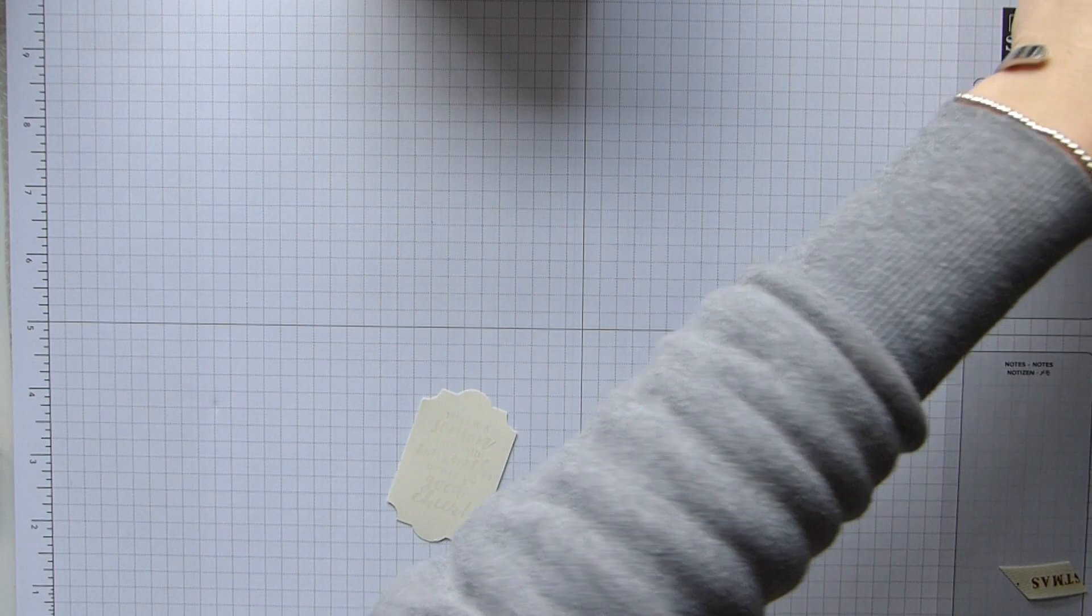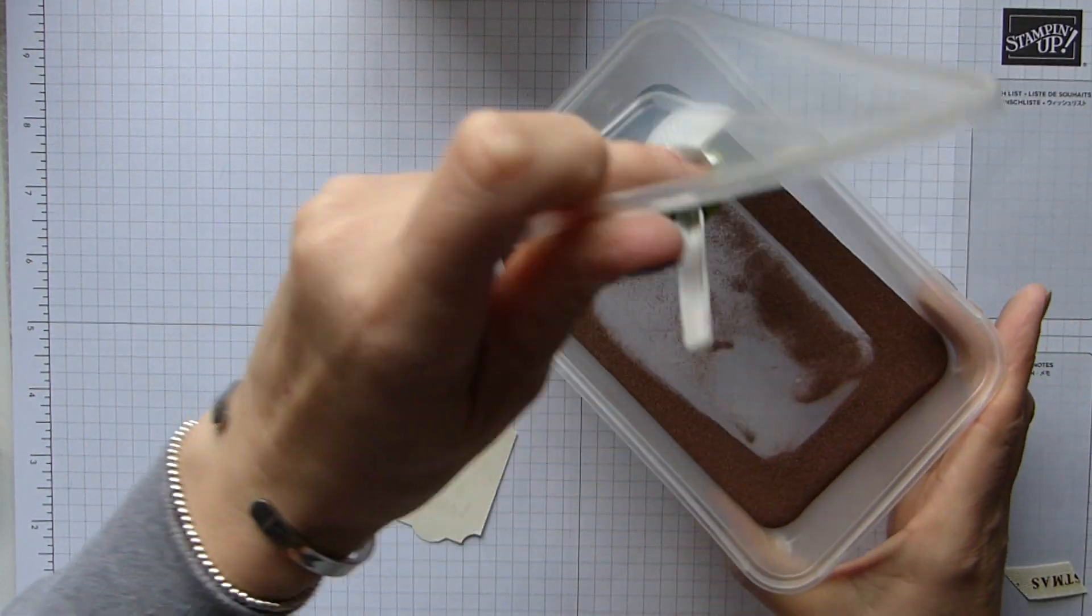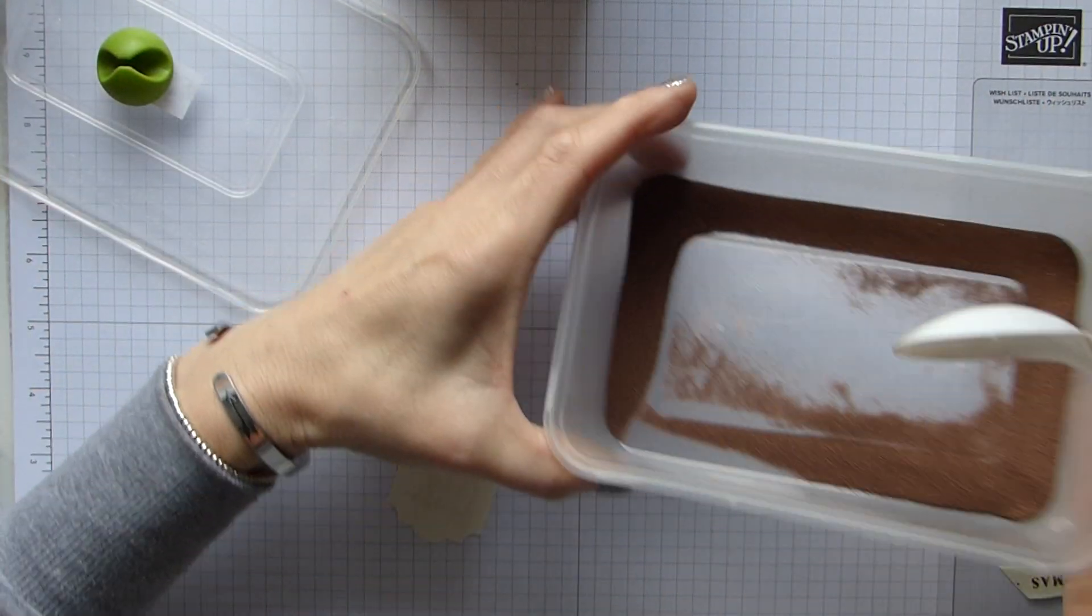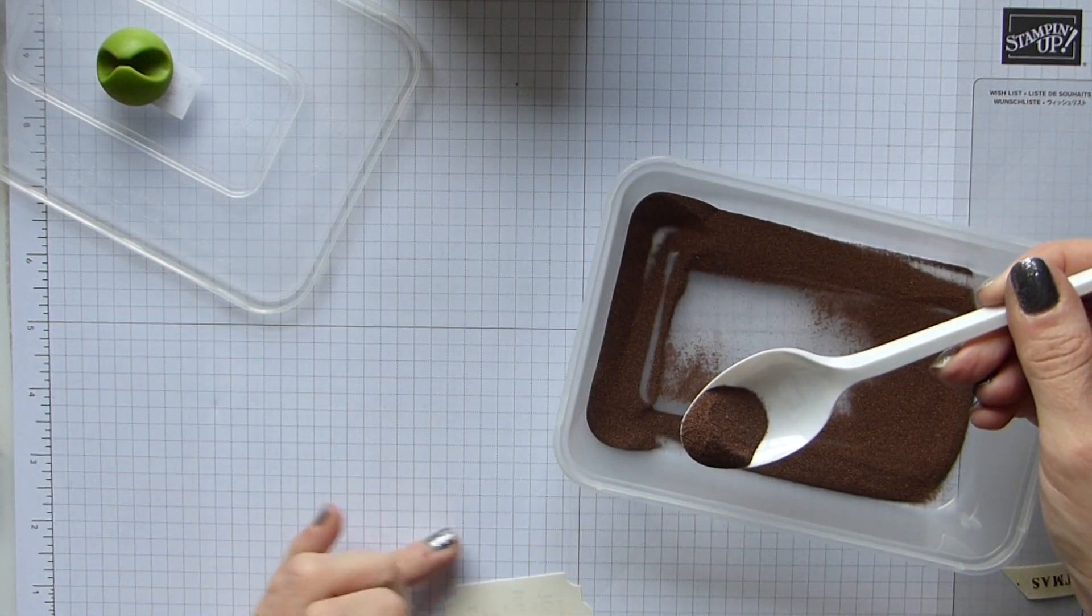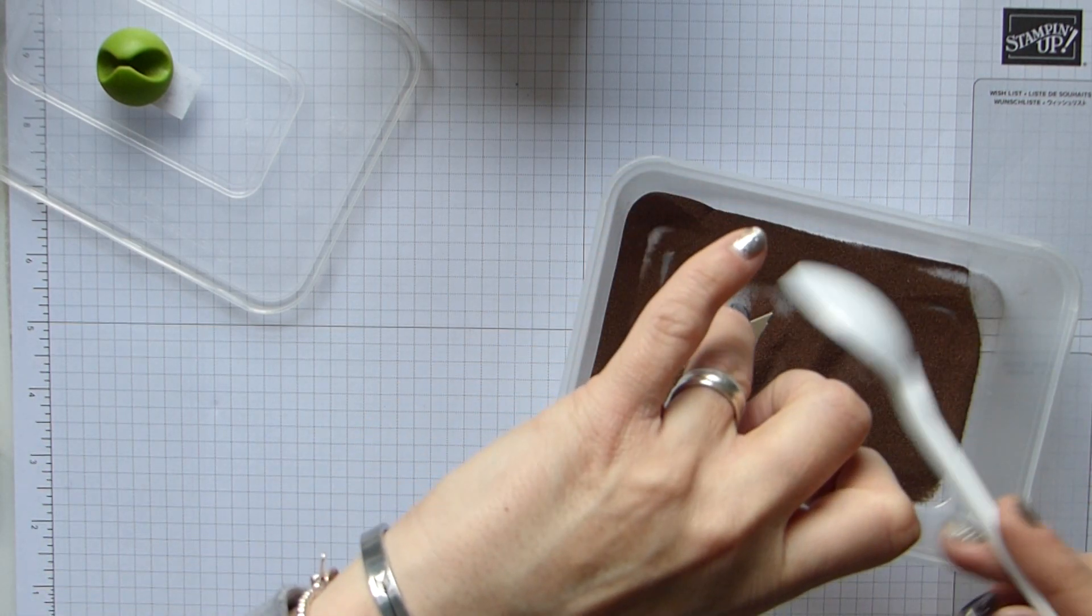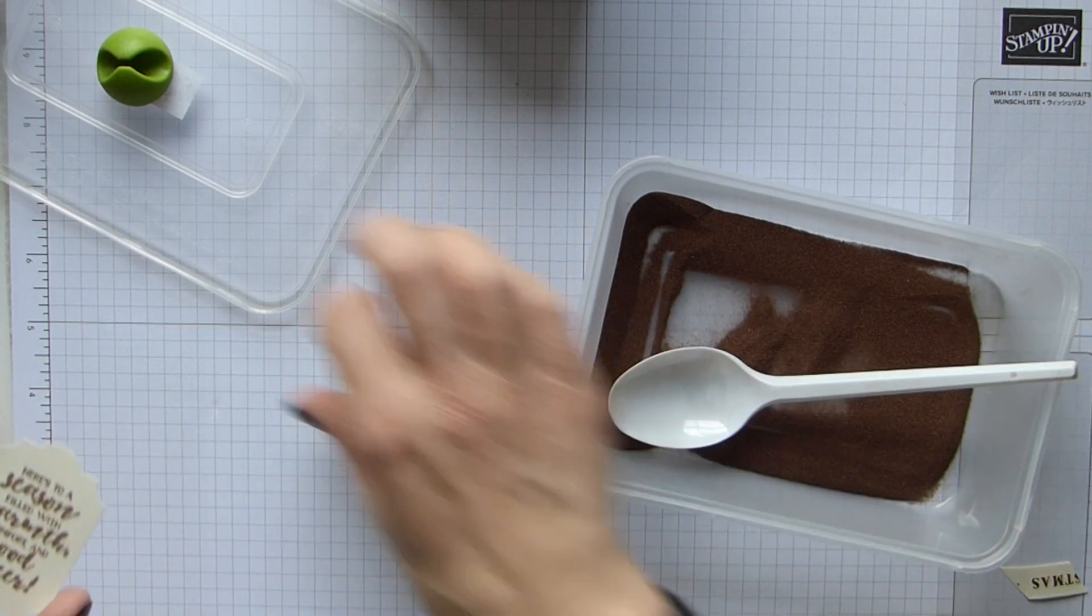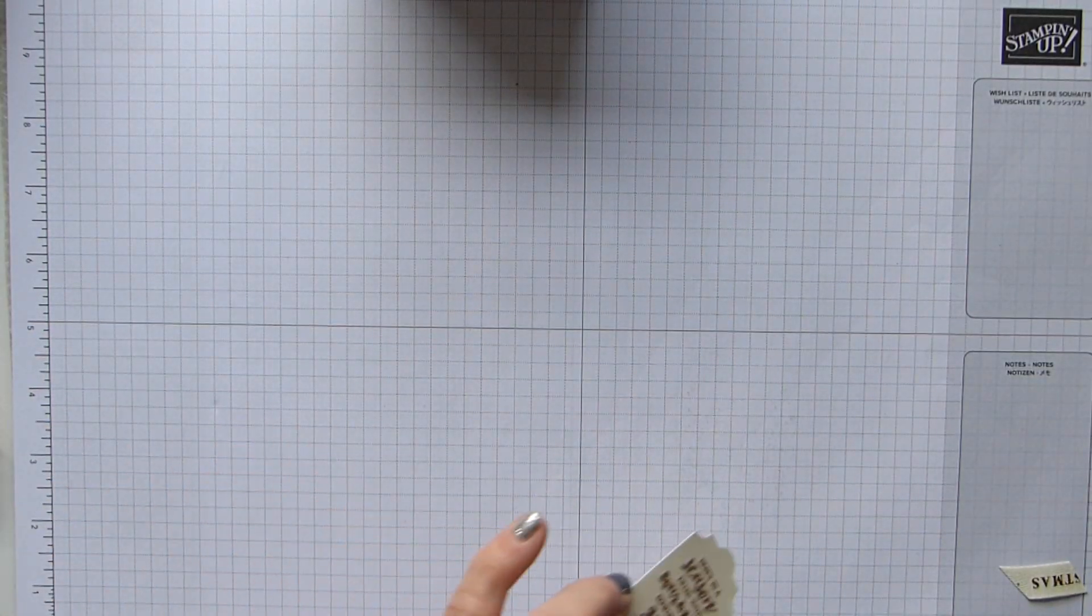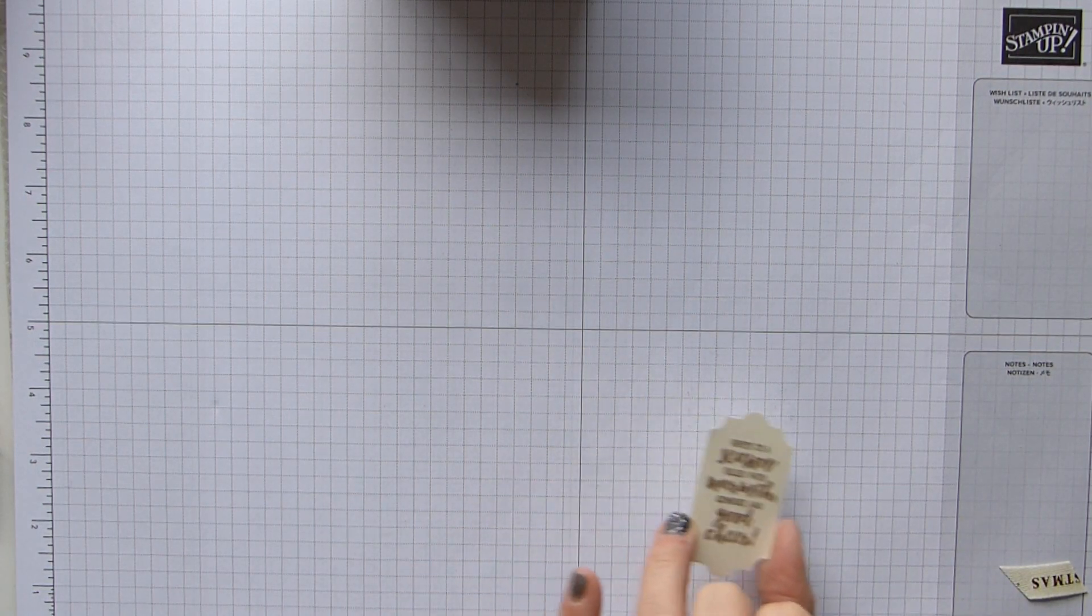So I'm just going to punch that out, and then I have my First Frost stamp set with that lovely sentiment. And then I want my embossing buddy and emboss it in copper just to tie that all in together. So I'm going to grab my Versamark. Whoops, get that a little clean. And then I'll have my copper embossing powder here.